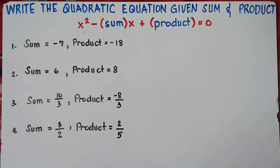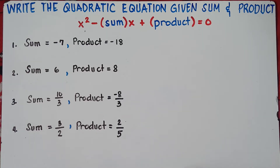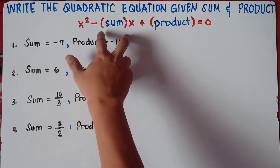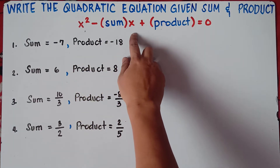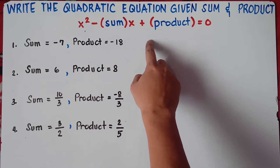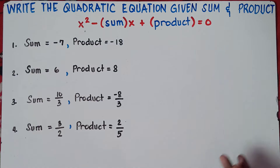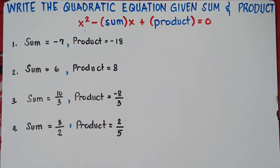Hi guys! Good day! It's me, Teacher MJ. Our topic for today class is all about writing the quadratic equation given the sum and product. So without further ado, let's do this topic. This will be our format or the equation: x squared minus quantity the sum times x plus quantity the product equals 0.